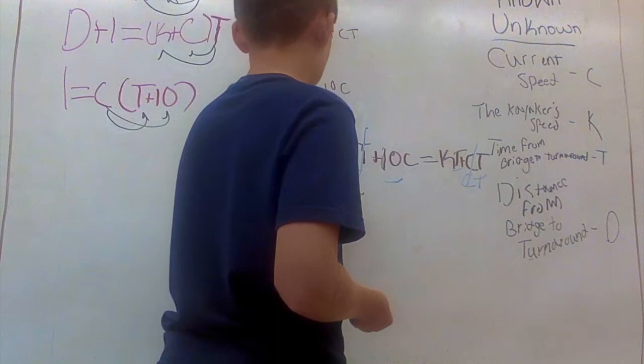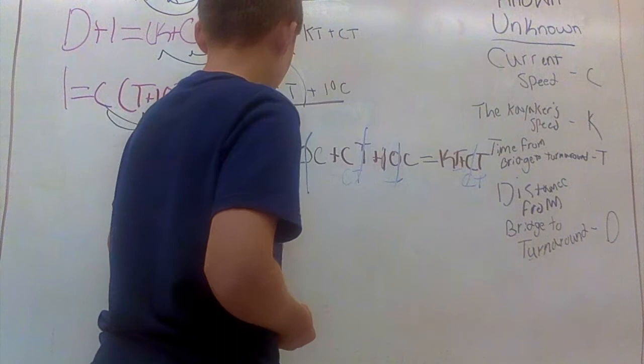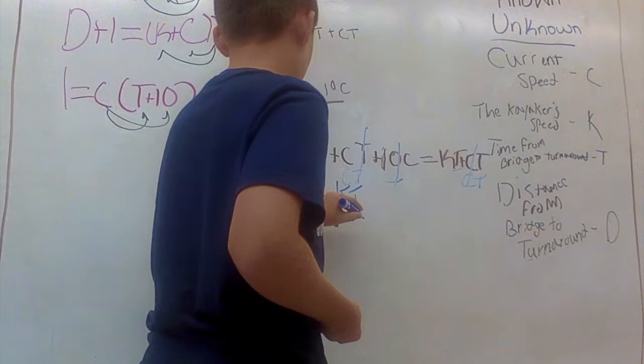So, we are left with 10K equals KT. So, we can divide by K on both sides. And we are left with 10 equals T.